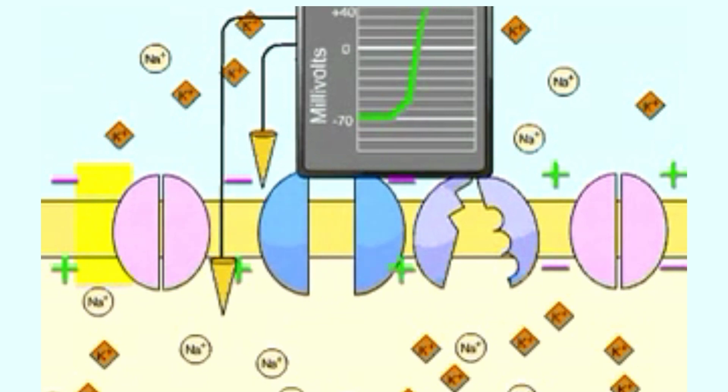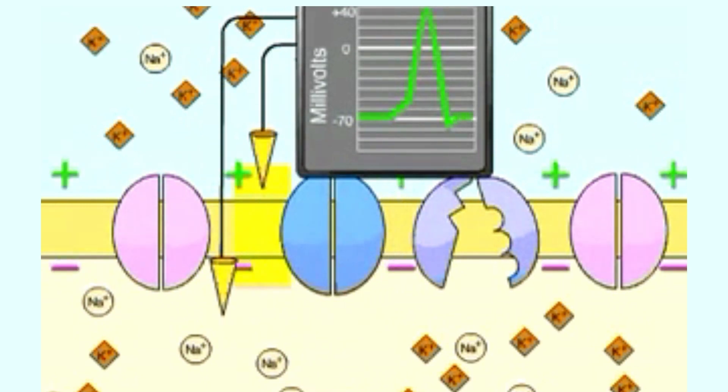Sodium channels close and potassium channels open. As potassium ions rush out, the membrane returns to being negative on the inside. The sodium-potassium pump then restores the balance of ions present at resting potential.